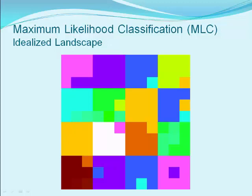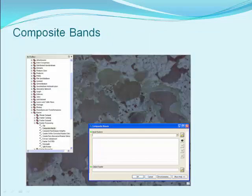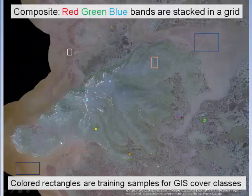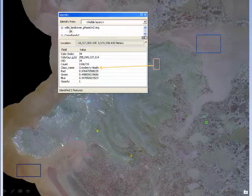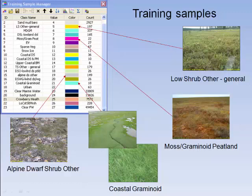We will now test our methods to analyze satellite imagery. We begin by collecting satellite imagery of Nelson Island in western Alaska. We can use the composite band tool from data management in the ArcGIS toolbox to build a composite red, green, blue multiband raster. The colored rectangles and polygons are the training samples for our spectral library. The MLC tool uses this library to classify the land cover. Here are some of the land cover classes that make up our spectral library, from alpine vegetation in the higher elevations down to the salt marshes and mudflats along the coast.